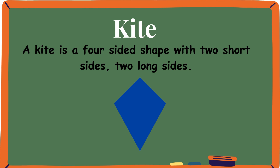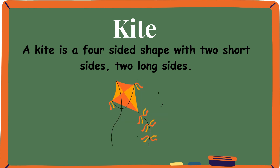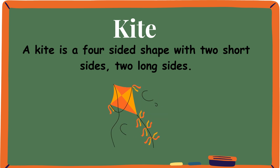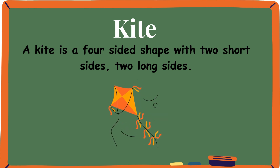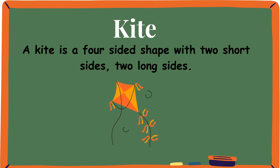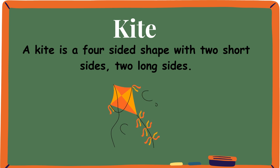Kite. A kite is a four-sided shape with two short sides and two long sides. Look at this kite — it's swaying across the sky and it also has a kite shape.